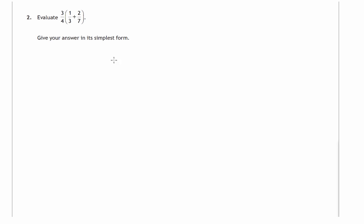Here we have a fraction question: three-quarters of the sum of a third plus two-sevenths. Three quarters of - remember 'of' can be replaced by 'times' - three quarters times a third plus two-sevenths. So let's tackle the addition first.